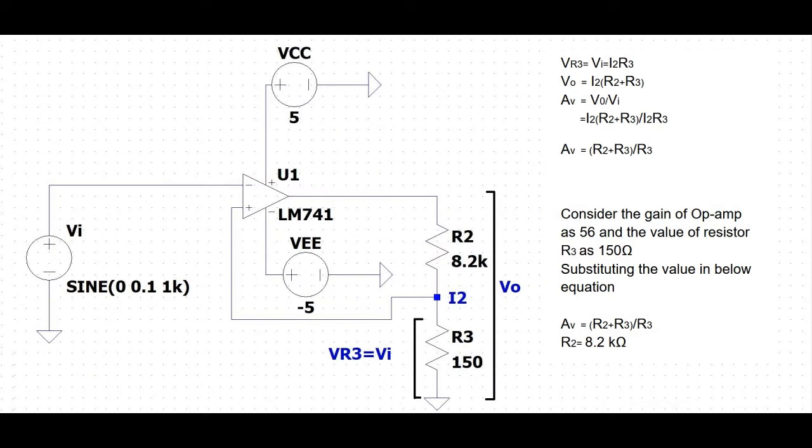The non-inverting amplifier behaves in a similar way to a voltage follower. The difference is that instead of all of the output being fed directly back to the input, only a portion is fed back. The output voltage is potentially divided across resistors R2 and R3. The junction of R2 and R3 is connected to the inverting input terminal, and there is zero voltage drop across R3.